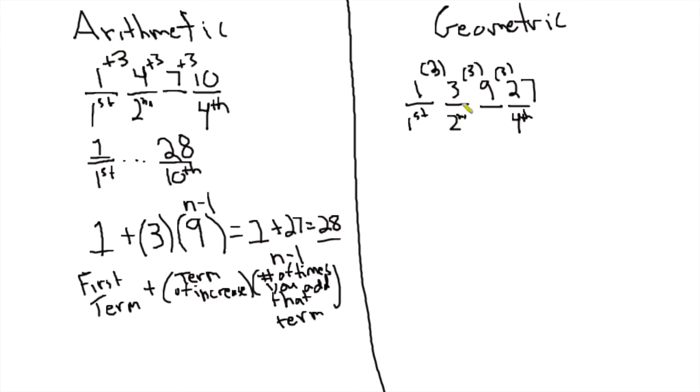So on a small problem where you don't have many slots, you can quickly just draw out your slots and do the math. But again, on a big problem, and you will see big problems, you need the formula. So for example, if the first term is 1, and we're increasing, we're going to multiply by 3 again, let's say we want to figure out the 10th term. So how do we do this?